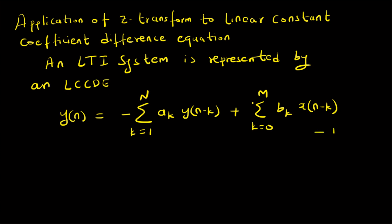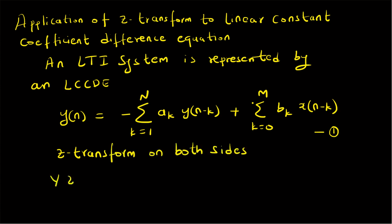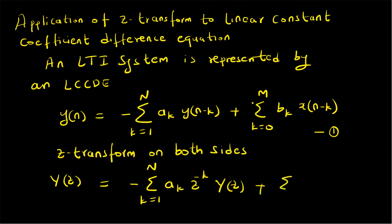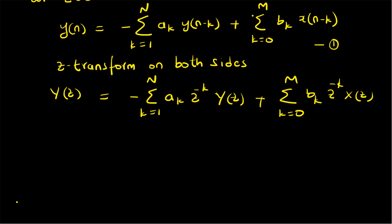Now let us call this equation 1 and apply the Z-transform on both sides. We get Y(z) = minus summation k=1 to N of a_k · z^(-k) · Y(z), using the time-shifting property. Similarly for the input part, we have summation k=0 to M of b_k · z^(-k) · X(z), again using the time-shifting property.